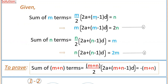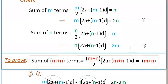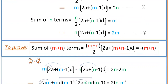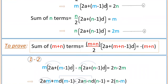So from using these two equations, subtract the second equation from the first. First equation is m into 2a plus m minus 1 into d equals 2n. Subtracting the second equation: minus n into 2a plus n minus 1 into d, giving us 2n minus 2m on the right side.